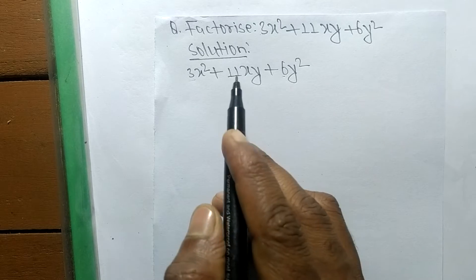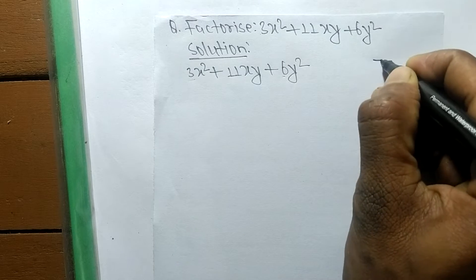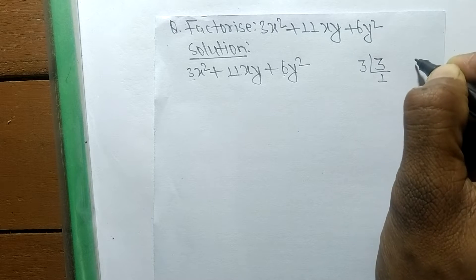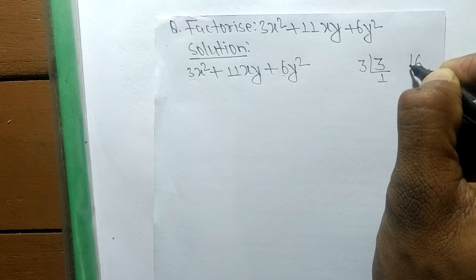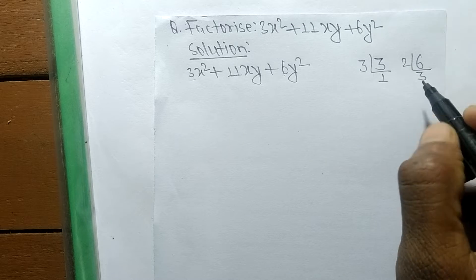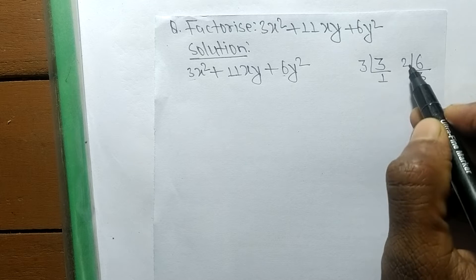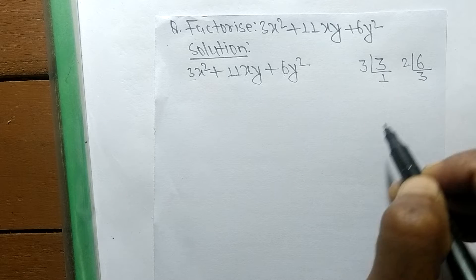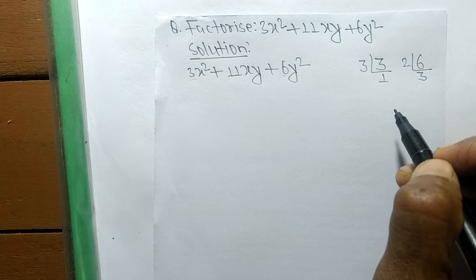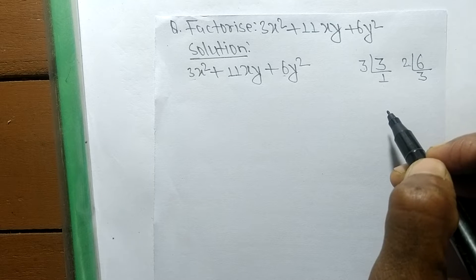The factors of the first number: 3 times 1 equals 3. The factors of the last one: 2 times 3 equals 6. So we got the numbers here: 3, 1, 2, and 3. By multiplying these numbers we have to find such numbers that by adding up give us the middle term.